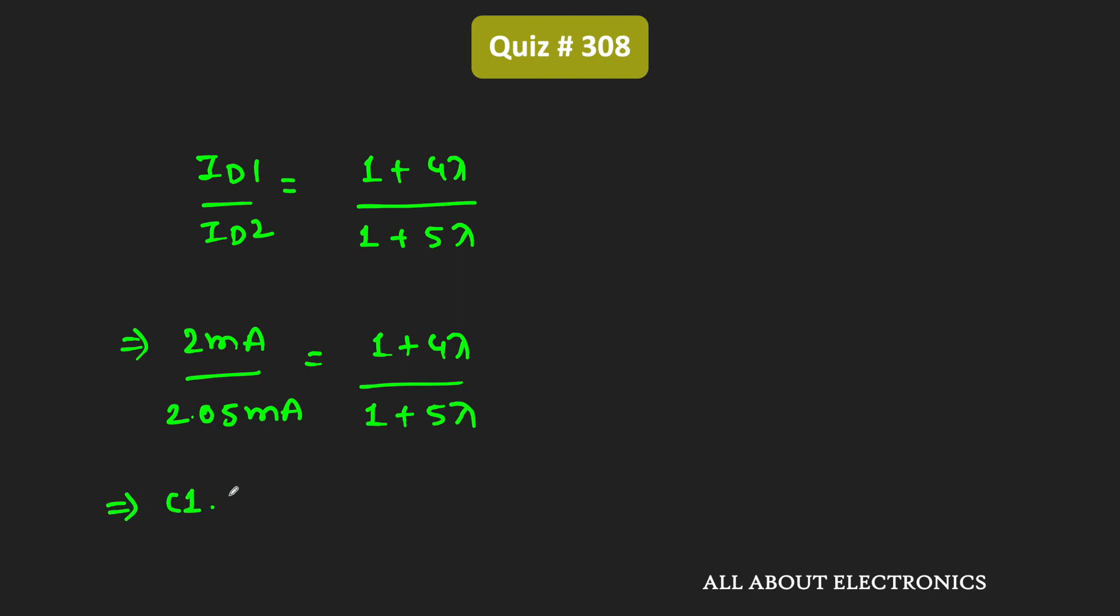then we can say that 1.025 times (1 + 4λ) equals (1 + 5λ). That means 1.025 + 4.1λ equals 1 + 5λ.